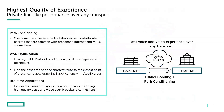EdgeConnect delivers the highest quality of experience utilizing path conditioning, which bonds multiple internet circuits together into an overlay tunnel and applies services like forward error correction and packet order correction — turning broadband internet circuits into an MPLS-like connection. We also have WAN optimization with TCP protocol acceleration, data deduplication and compression to send less data over WAN links, and real-time application experience that leverages business intent overlays to prioritize voice and video traffic with the highest quality over broadband circuits.